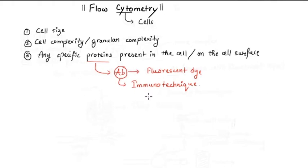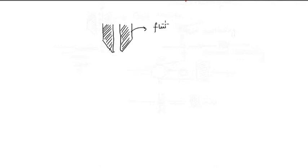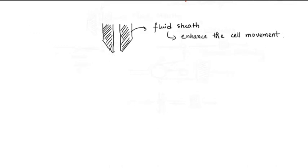So that is an overview of flow cytometry. Now let's move into the process. The flow cytometer has a tube, and these parts are filled with a fluid sheath. These fluid sheaths enhance the movement of the cell. Now the cells which are subjected to flow cytometry come in from this tube, they flow through it, and when they come out they are subjected to laser light.